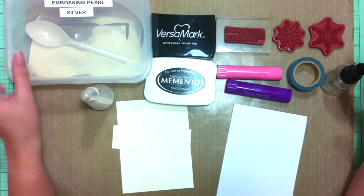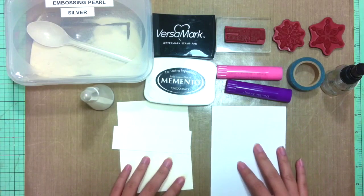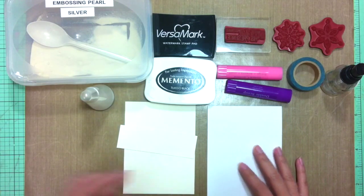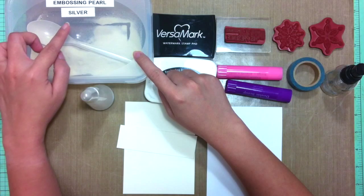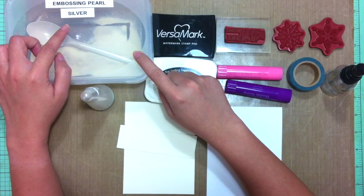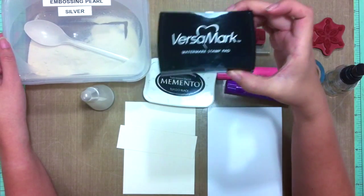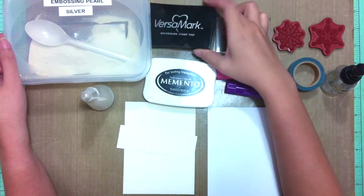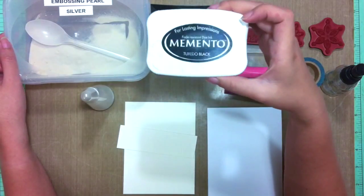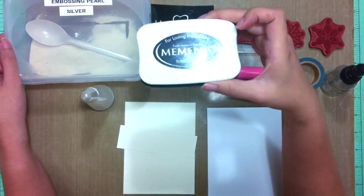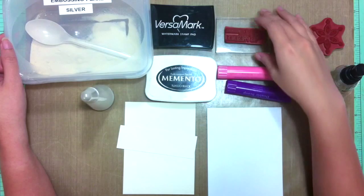Okay, for the supplies you need some embossing powder - here I'm using the pearl silver, I think it's by Ranger - some embossing ink, I'm using Versamark, some black ink, I'm using Memento Tuxedo Black, some stamps, gelatos of course.